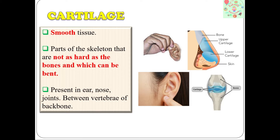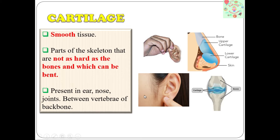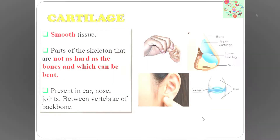What are these? They are known as cartilage. Cartilage is a soft bone tissue that connects joints. It is present in external parts like the ear and nose.